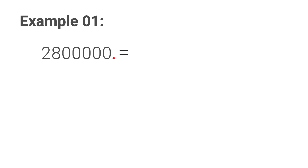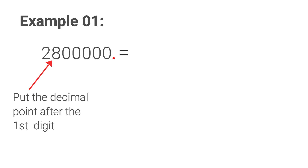How to express this in scientific notation? All we need to do is move the decimal point. Remember, in a whole number the decimal point lies next to the last digit. Here we move the decimal point forward until it comes between the first and second digits — in this case between two and eight. Now the first part of scientific notation is two point eight.